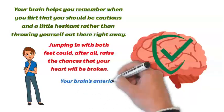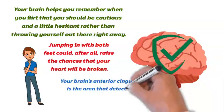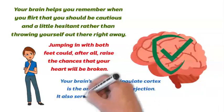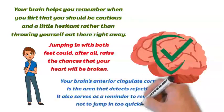Your brain's anterior cortex is the area that detects rejection and it also serves as a reminder to remember not to jump in too quickly.